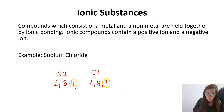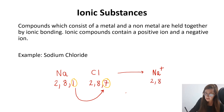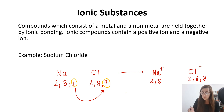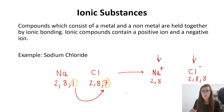So sodium is going to give up its electron to chlorine. Sodium will become Na+, a positive ion with an electron configuration of 2, 8. And chlorine will become a negative ion with an electron configuration of 2, 8, 8. So we've got our positive metal ion and our negative non-metal ion making up our ionic substance — lots of positive sodium ions and lots of negative chlorine ions ionically bonded together in a lattice.